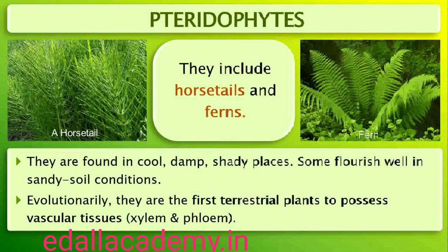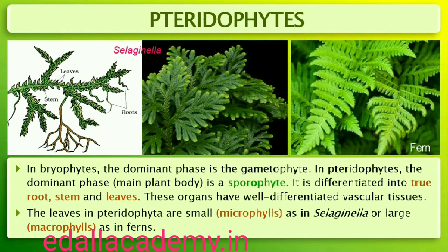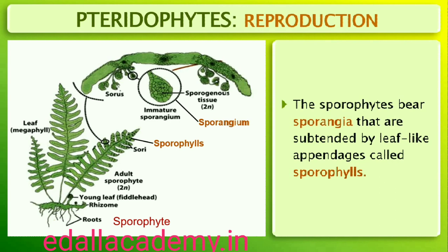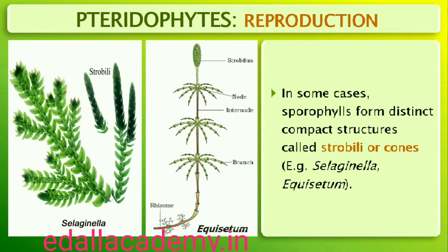In bryophytes the dominant phase in the life cycle is the gametophytic plant body. However, in pteridophytes the main plant body is a sporophyte which is differentiated into true root, stem and leaves. These organs possess well-differentiated vascular tissues. The leaves in pteridophytes are small (microphylls, as in Selaginella) or large (macrophylls, as in ferns). The sporophytes bear sporangia that are subtended by leaf-like appendages called sporophylls. In some cases sporophylls may form distinct compact structures called strobili or cones, as in Selaginella and Equisetum.